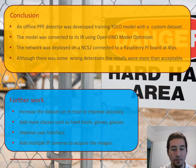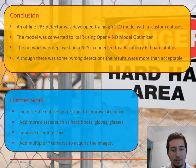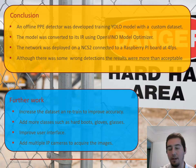Something I also wanted to do is add multiple IP cameras to acquire images, rather than using only the Raspberry Pi camera, so I can use existing cameras on the construction site and just process those images. Thank you very much, and I hope you enjoyed this presentation.